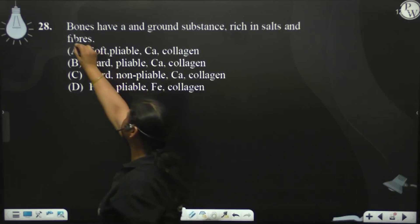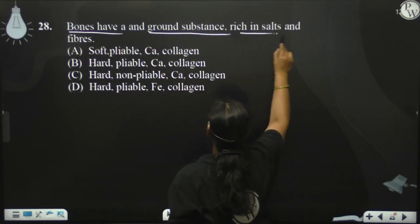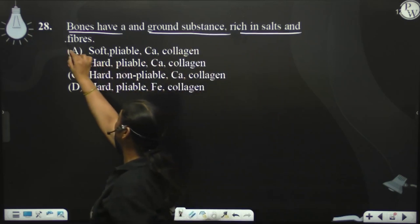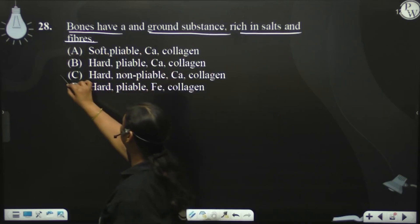Bones के बारे में अगर हम बात करते हैं, it is provided with a ground substance rich in salts and fibers. Collagen fibers होते हैं bone के matrix में, और bone का जो matrix होता है, वो hard होता है.